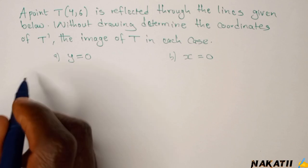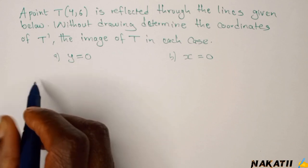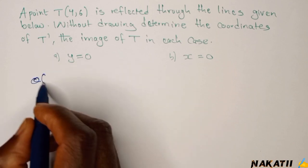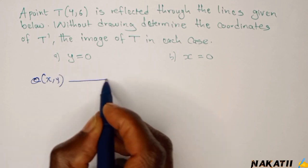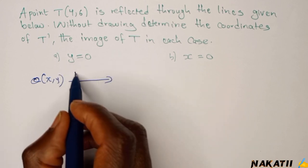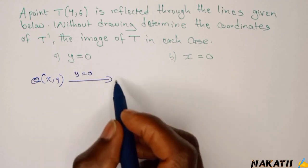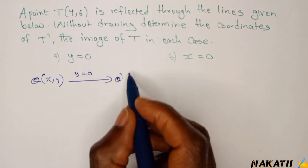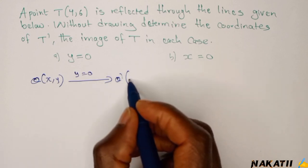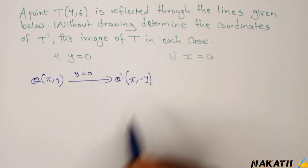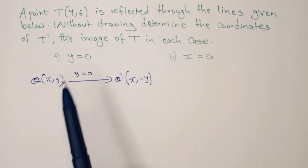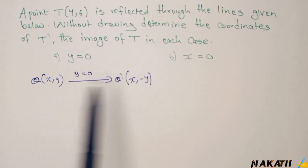So we can pick a point. Let's have a general point, for example Q which is (x,y). When you reflect point Q on line y equals 0, which is the x-axis, our Q prime, which is the image of this one, will be (x, -y).